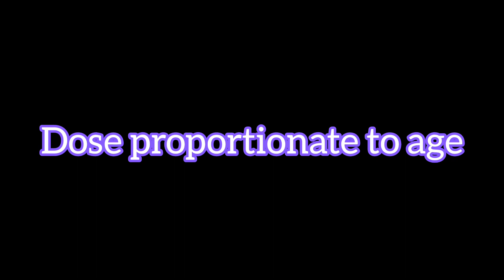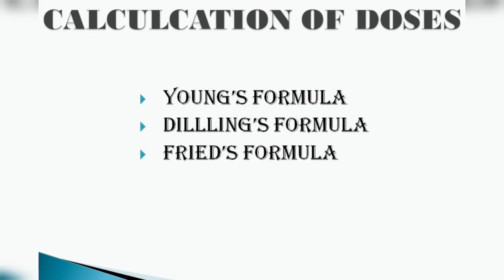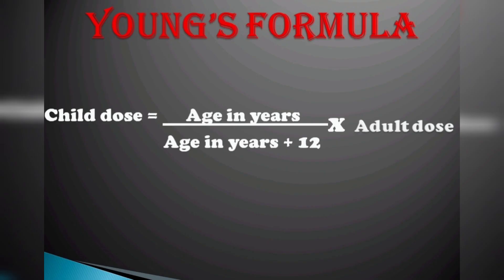We are going to calculate a child dose. For child dose, there are 3 formulas: Young's formula, Dilling's formula, and Fried's formula. For Young's formula, the child dose is equal to age in years divided by (age in years plus 12), multiplied by the adult dose.